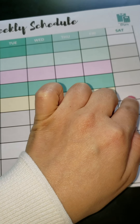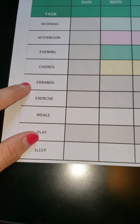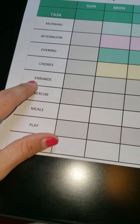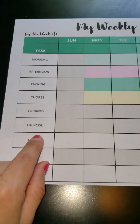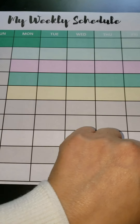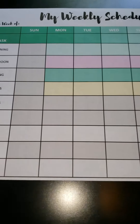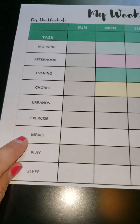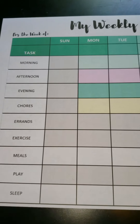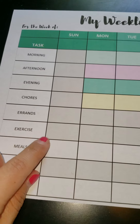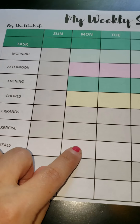If there are any errands that you need to do, list them here in these blocks. If you need to schedule your exercise time, then I would list it here. If you want to work on some meal plans — maybe you're just planning for dinner — then you would list each dinner here.